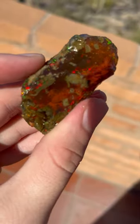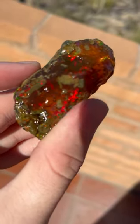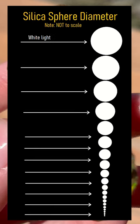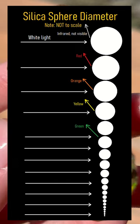In the case of the opal I am holding, the silica spheres in question were on the larger end, as it reflected back primarily red light. In contrast, opals which reflect back a blue or purple color have silica spheres with a smaller diameter.